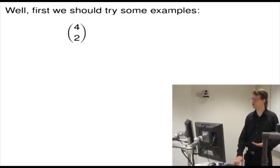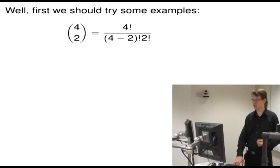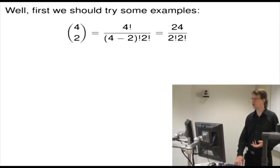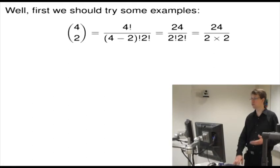But imagine we hadn't seen it before — how can we think like mathematicians and explore this? We should try some examples. So 4 choose 2: that's 4 factorial over 2 factorial times 2 factorial, which is 24 over 2 times 2, which is 6.